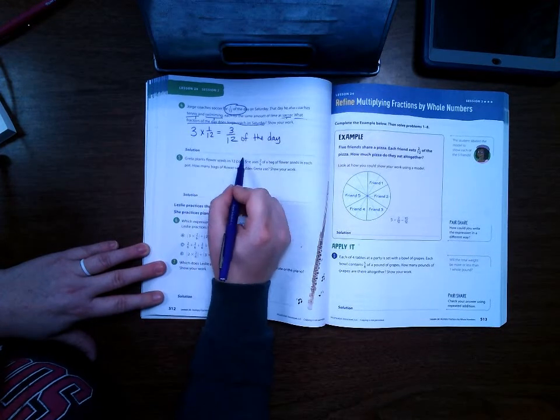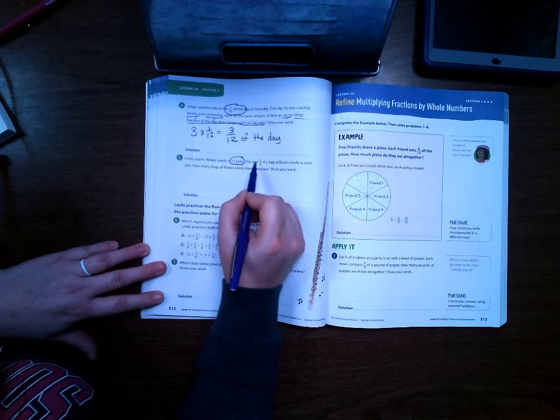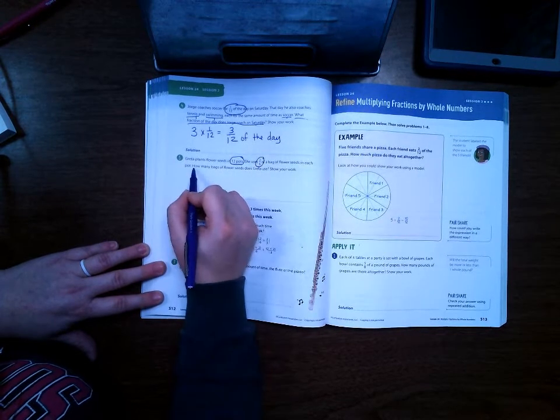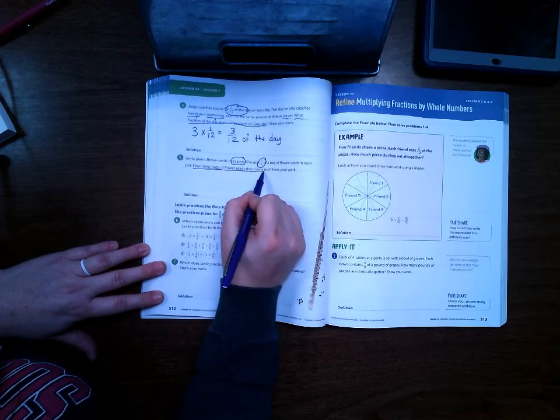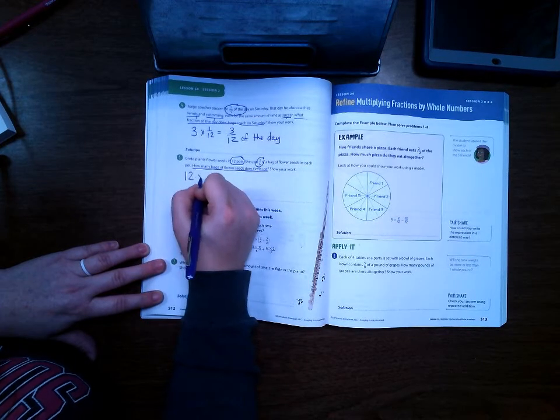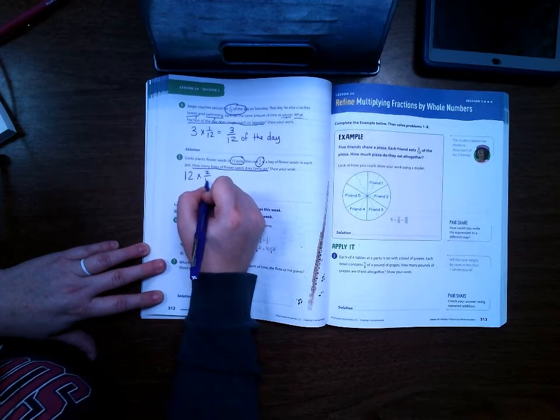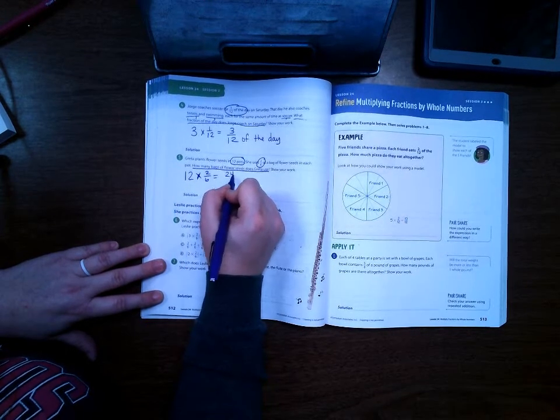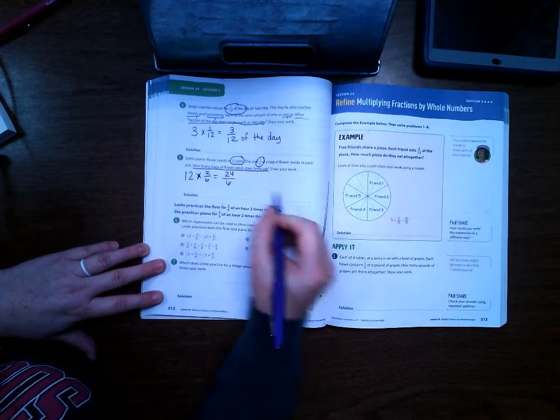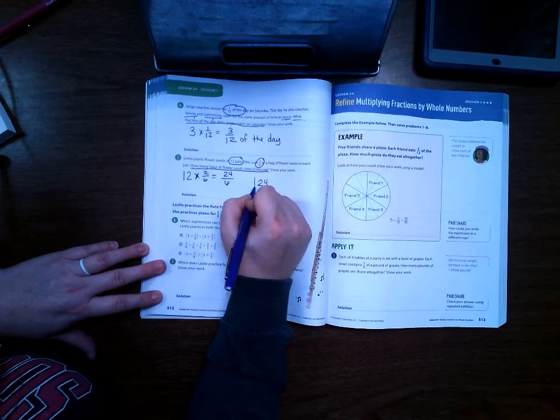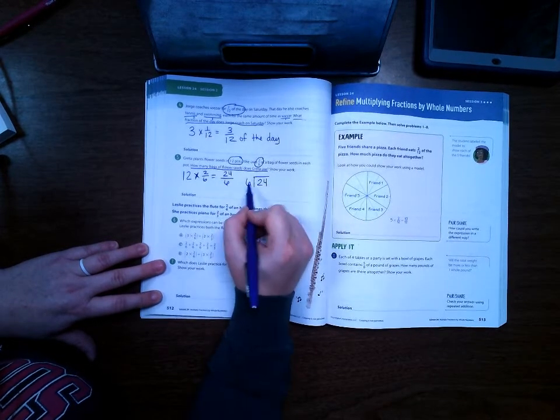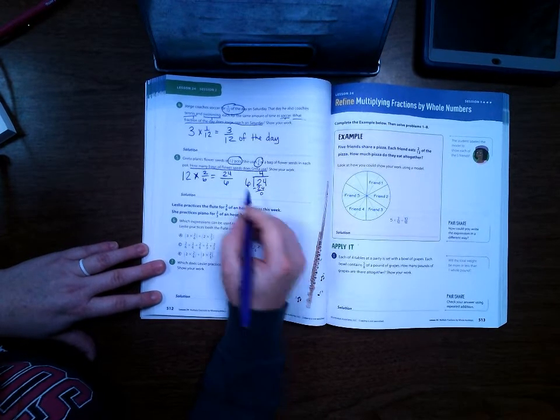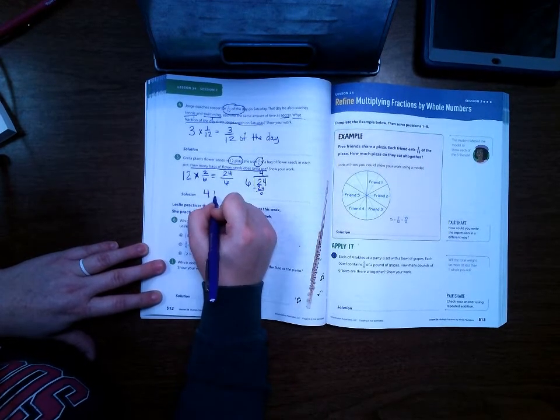Greta plants flower seeds in twelve pots. She uses two-sixths of the bag of flower seeds in each pot. How many bags of flower seeds does Greta use? So we have twelve times two-sixths. Twelve times two is twenty-four over six. So then let's divide. Twenty-four divided by six. Well, I know that six times four is twenty-four with nothing remaining. So she uses four bags.